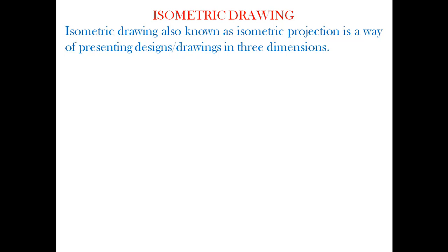Isometric projection is a way of presenting designs or drawings in three dimensions. We will be working with figures such as rectangle, square, trapezium, triangles and the likes. Those figures are known as plain figures, and they are usually in two dimensions. For example, if you are told to construct a square, a triangle, or a rectangle, you will be given your dimensions in length and breadth.